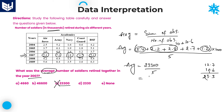Dividing 23300 by 5: 5 goes into 23 four times (20), remainder 3; 33 divided by 5 is 6 times (30), remainder 3; then 30 divided by 5 is 6. The result is 4660. That is the required average answer.